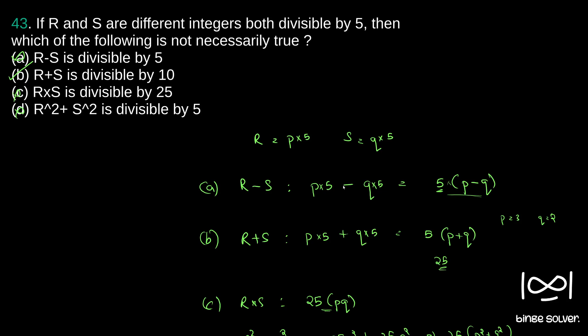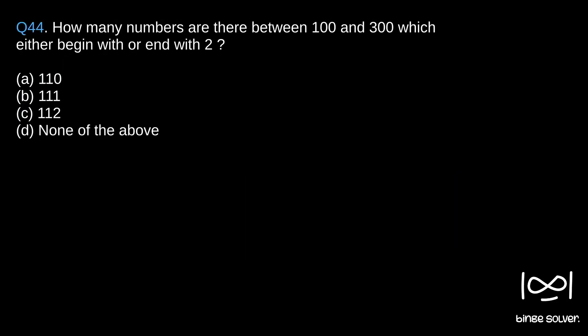Next question, Question 44: How many numbers are there between 100 and 300 which either begin with or end with 2? To find all the possible combinations, we can use the concept of permutation, but the problem there will be to find the duplicate cases. So to avoid such mistakes or problems of finding duplicates, what we will do is split it into three cases.